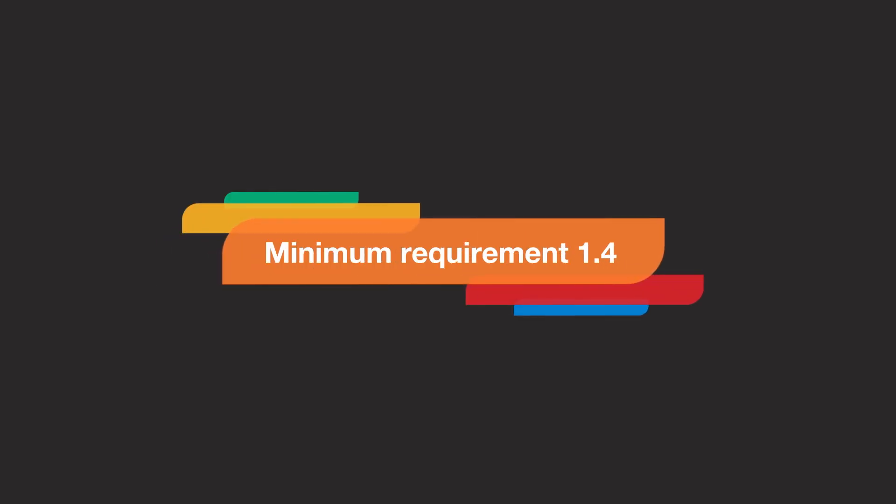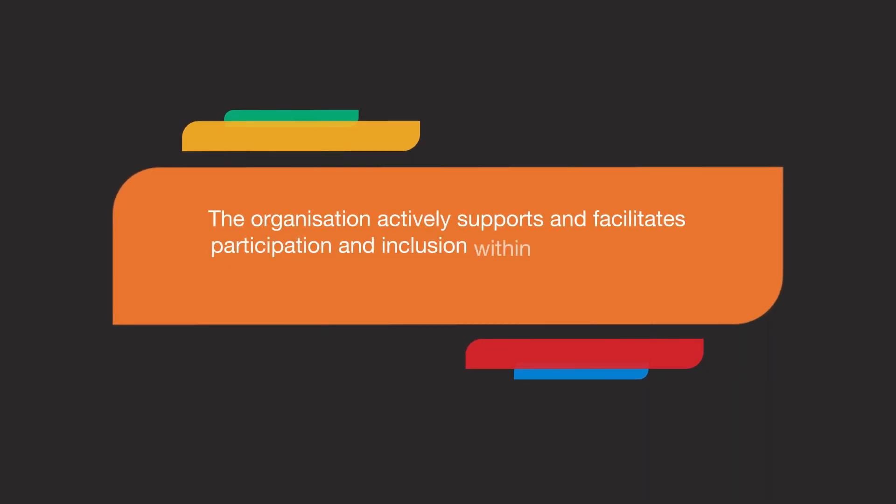Minimum requirement 1.4: the organisation actively supports and facilitates participation and inclusion within it by Aboriginal children, young people and their families. Making a child's family feel welcome and included in an organisation contributes to their safety. When thinking about how to support inclusion and participation in your organisation, remember that for Aboriginal children, culture and family go hand in hand. Preventing racism needs to extend to how families are treated so that they are encouraged to participate as well as children.